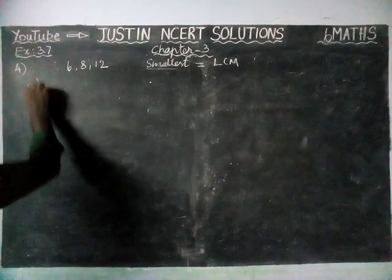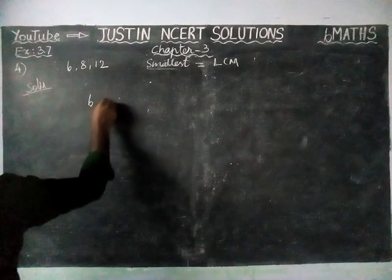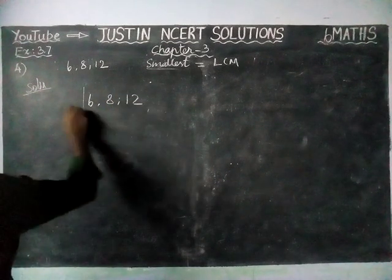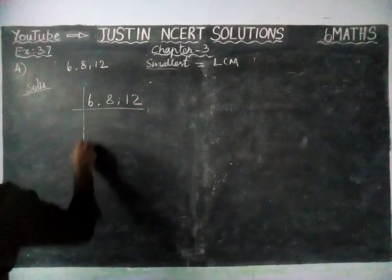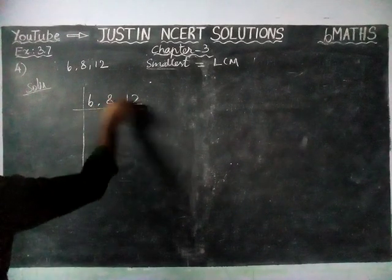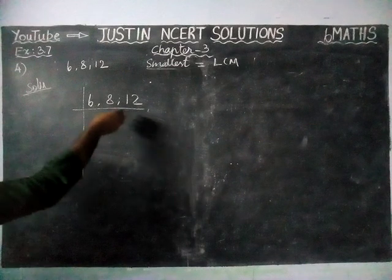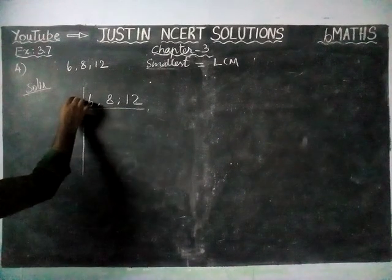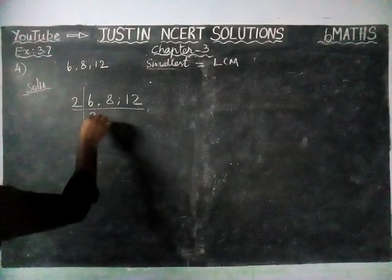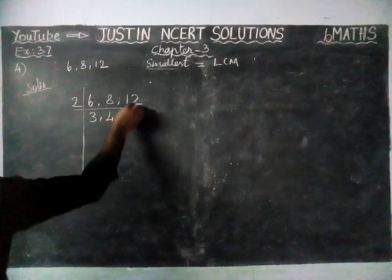So now, first we are going to find LCM for the given values: 6, 8, and 12. We are going to divide by a common number. Since the numbers are 6, 8, and 12, this group can be divided by 2. 3 twos are 6, 4 twos are 8, 6 twos are 12.